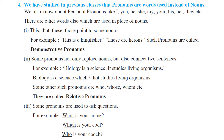Question number 4: We have studied that pronouns are words used instead of nouns. We know about personal pronouns like I, you, he, she, my, your, his, her, they, etc. There are other words also used in place of nouns. Sometimes we use words like this, that, these, those — which point to some noun. For example: 'This is a kingfisher.' 'Those are herons.' Such pronouns are called demonstrative pronouns because they demonstrate or point out something.